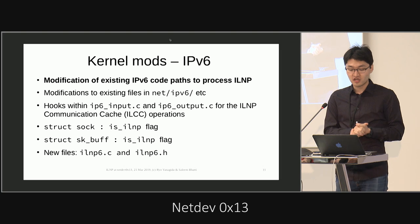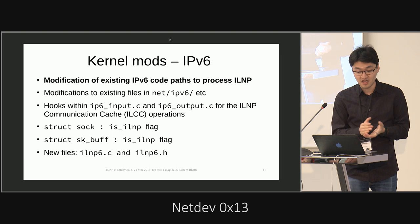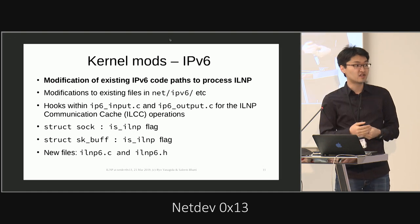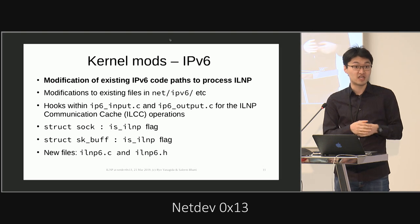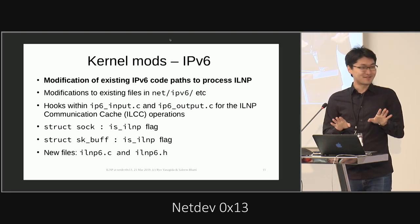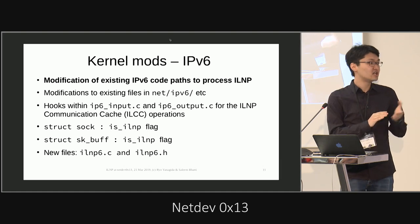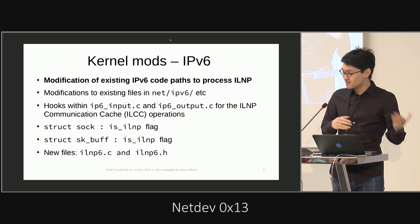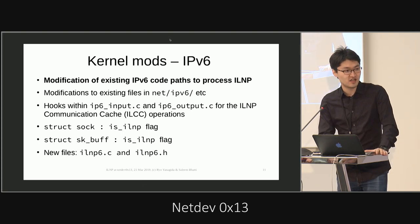As Salim mentioned, the struct sock has the is_ILNP flag, and sk_buff also has the is_ILNP flag to indicate that this is an ILNP connection, so that ILNP operations can be triggered as it goes through the IPv6, TCP, and UDP processing paths. ILNP also has its own new files: ilnp6.c and ilnp6.h are added.